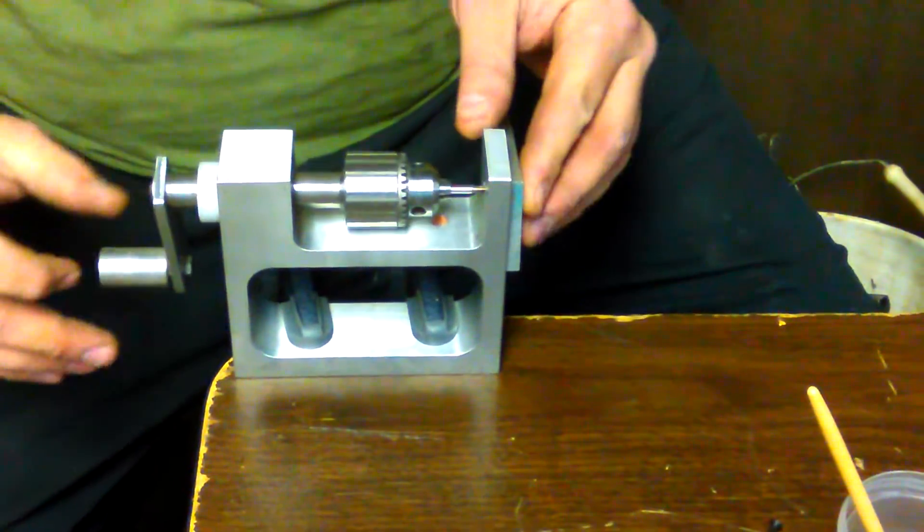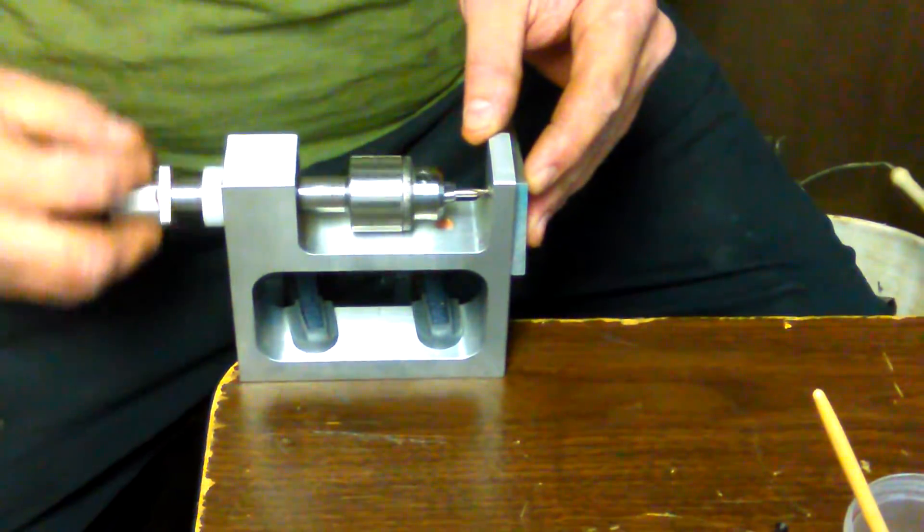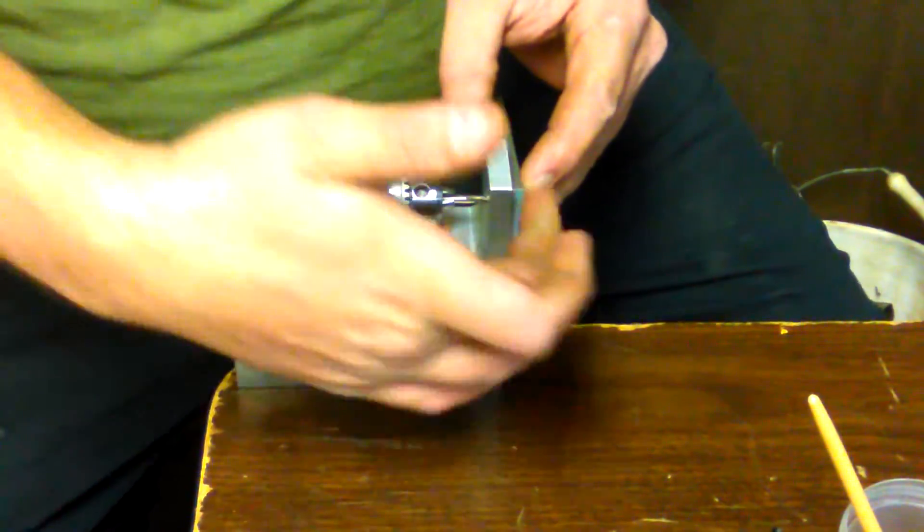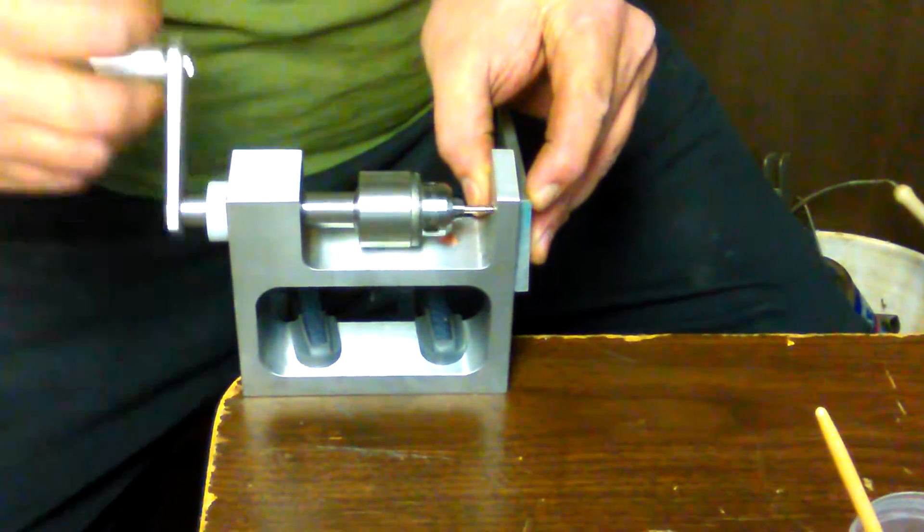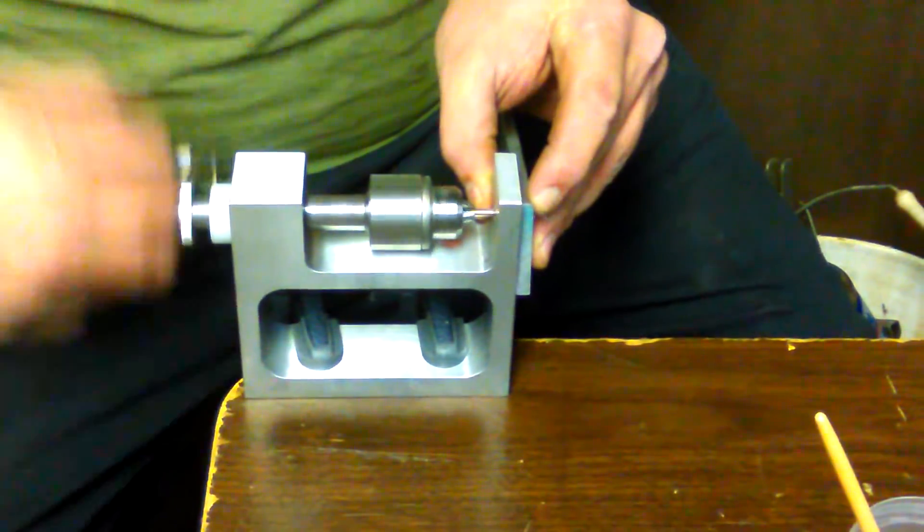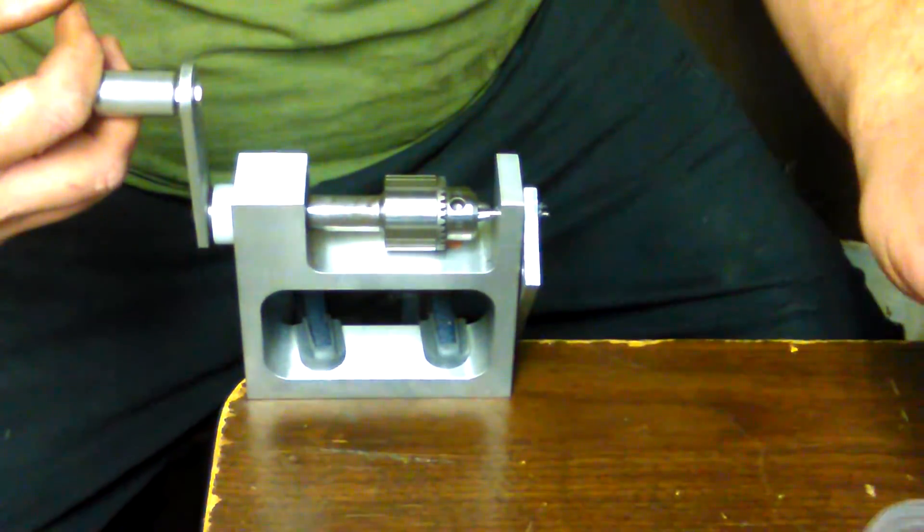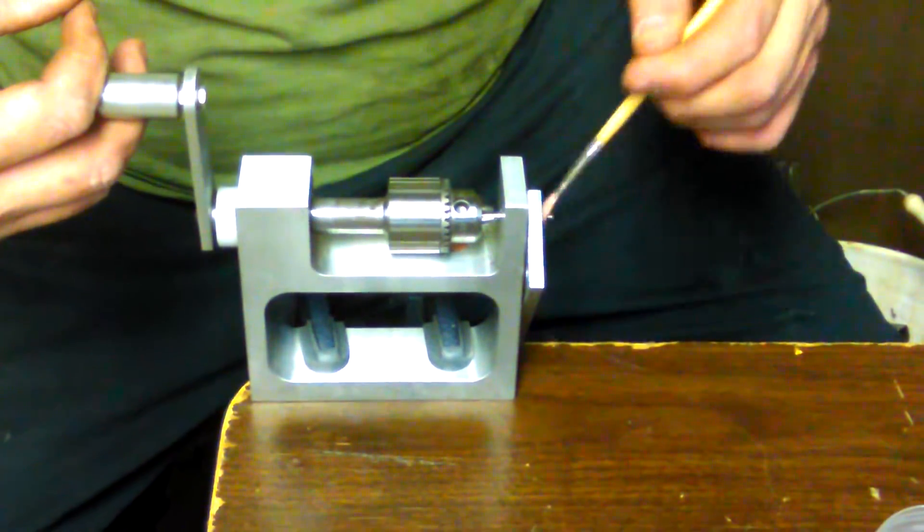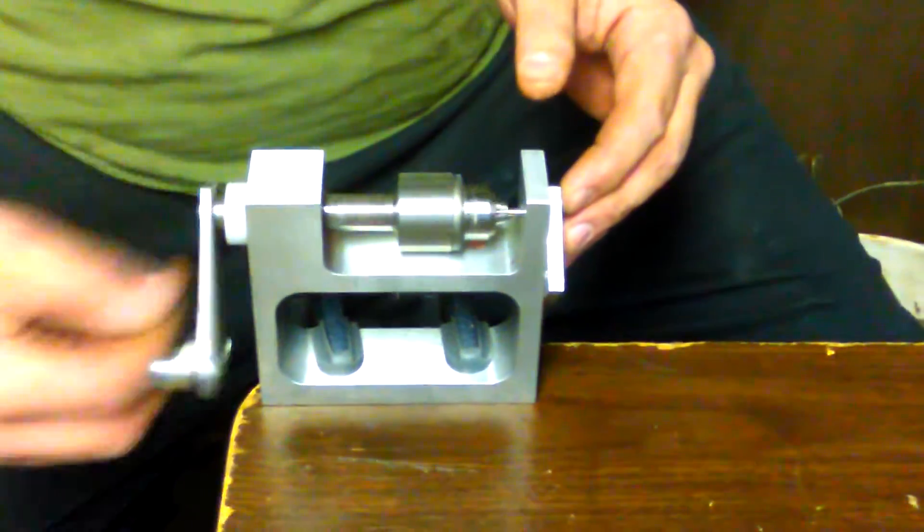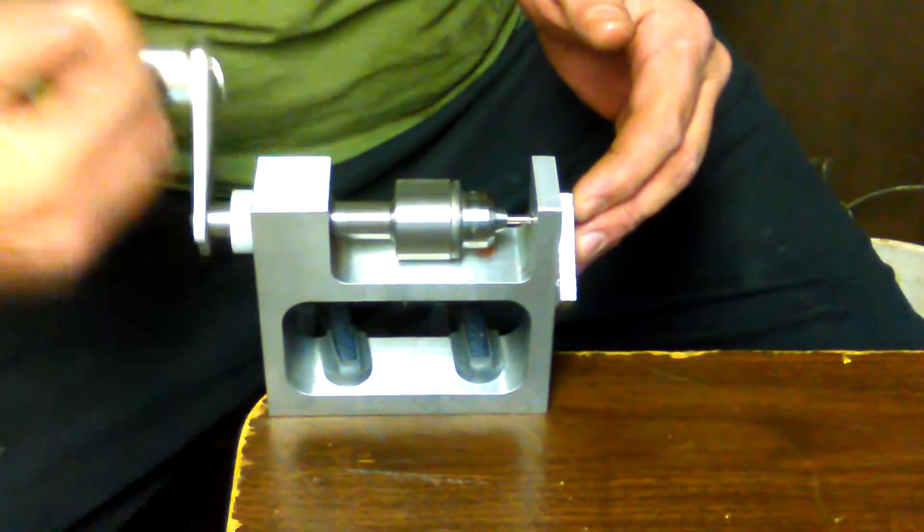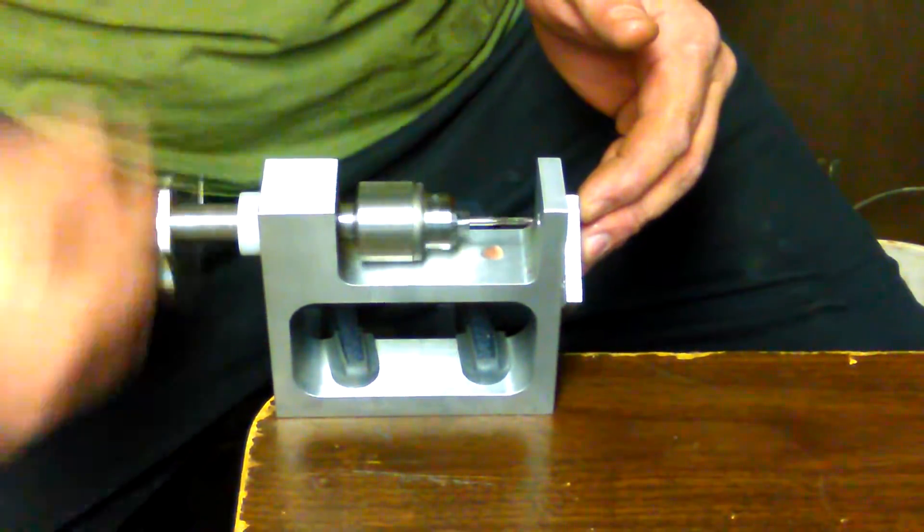This just keeps everything square, level, straight, parallel and happy. Just run it through there like that, knock your chip off like using a brush, and back out like that.